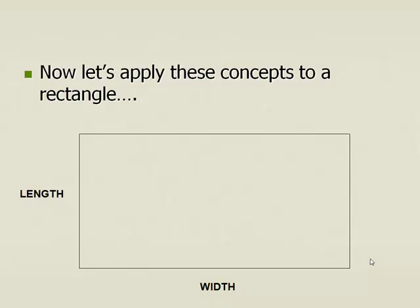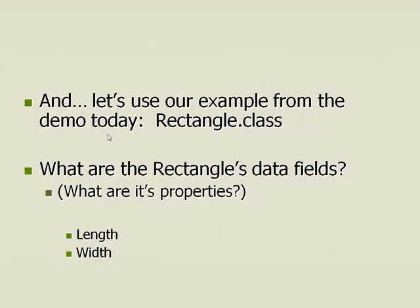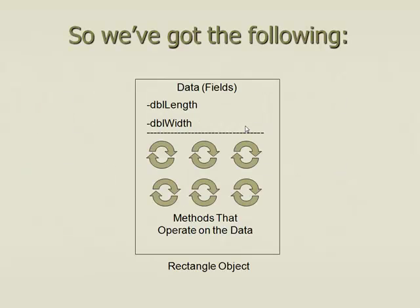Let's apply these concepts to a rectangle. Just like the Hare had data fields and procedures, we can apply these concepts to a rectangle. Look at this and ask yourself: what variables does this rectangle have? If you said the length is a variable and the width is a variable, you're exactly right. What are the rectangle data fields? Length and width. Those are the properties — length would be like 5, and width would be 8. These are the data fields, the variables for our rectangle object.